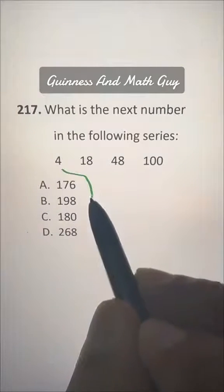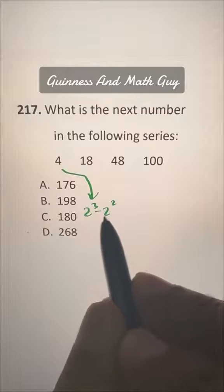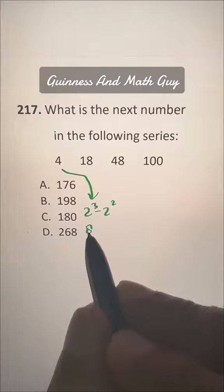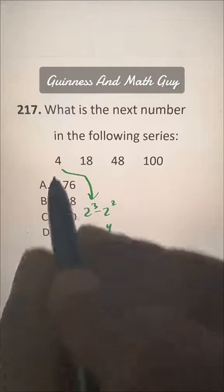This 4 is 2 cubed minus 2 squared. So 2 cubed is 8 and 2 squared is 4. 8 minus 4 is 4.